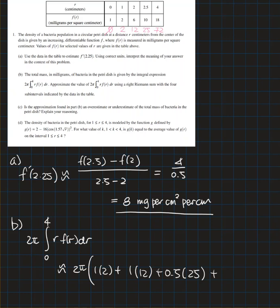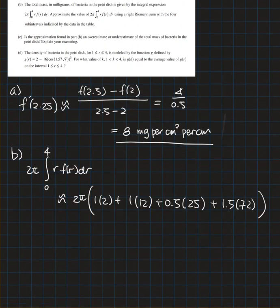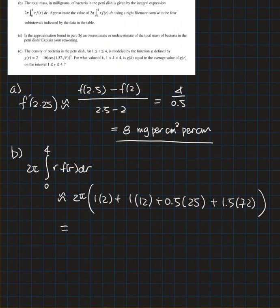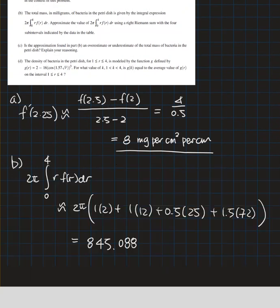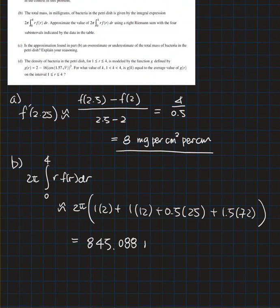Then 2 minus 1 will be 1 times 12, 2.5 minus 2 will be 0.5 times 25, and 4 minus 2.5 will be 1.5 times 72. I plug these numbers into my calculator so I got 845.088, and the unit will be, since this is total mass, milligrams.